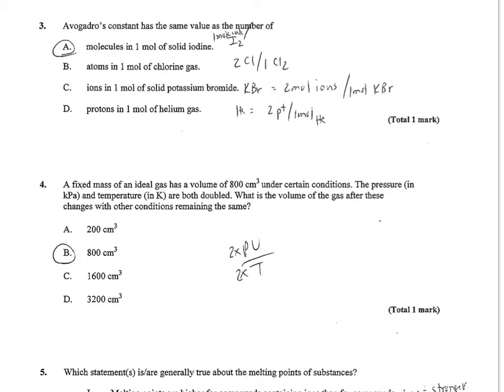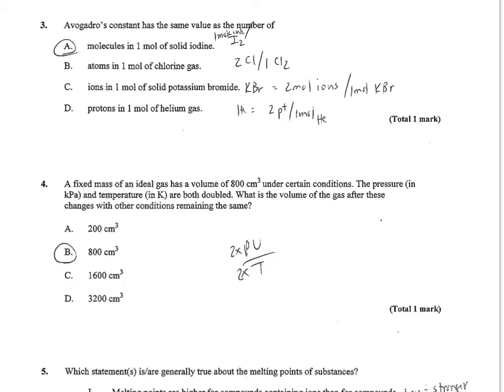Number 3 says, Avogadro's constant has the same value as the number of molecules in 1 mole of solid iodine. That's 1 because a molecule of solid iodine, 1 mole would only have 1 mole of molecules. Atoms in 1 mole of chlorine gas, that's 2 moles because there's 2 chlorine atoms per molecule. Ions in 1 mole of solid potassium bromide has 2 ions. And protons in 1 mole of helium gas, helium is number 2, so it's got 2 protons per mole. So only A is truly 1 mole of molecules in the solid iodine.